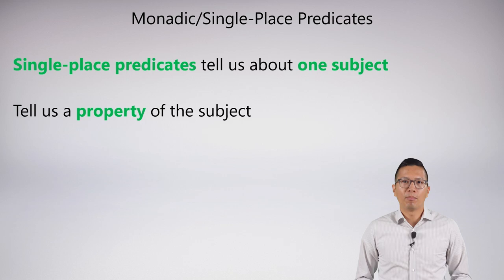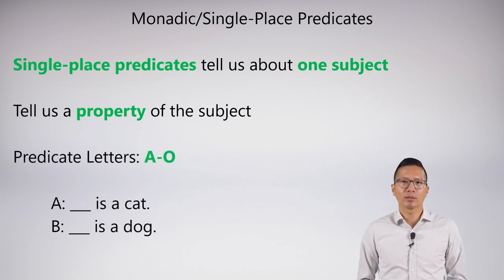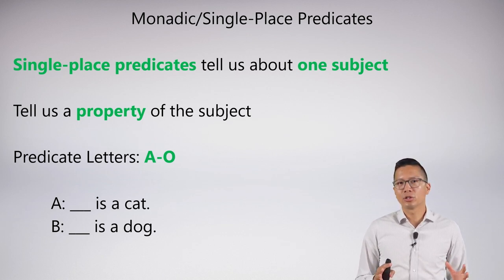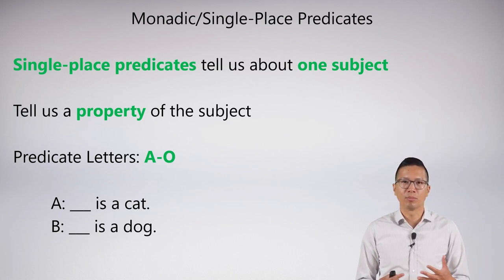There are two key types of predicates: single-place predicates and multi-place predicates. We'll start with single-place. Some people call these monadic predicates. A single-place predicate tells us about one subject, and like I said earlier, it's about the property of that subject. We're going to use letters to denote this because we're developing our syntax for symbolization. We'll use capital letters A through O to be our predicate letters.